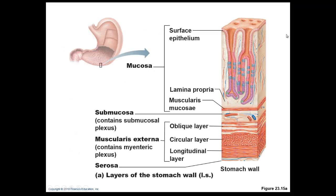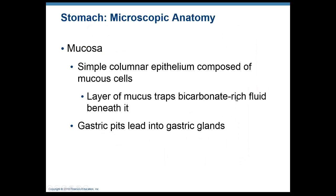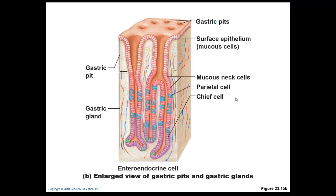Looking at the stomach lining, gastric glands are lined with a variety of cells with different functions. The major layer inside the mucosa is primarily mucus. The surface cells secrete a thick alkaline mucus to counteract the very low pH hydrochloric acid contents, protecting the stomach lining.